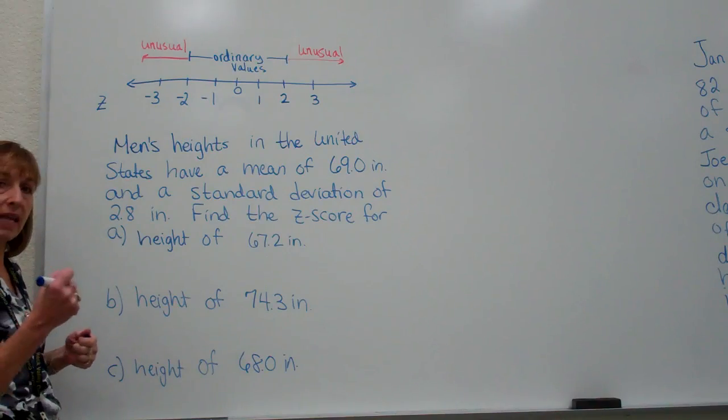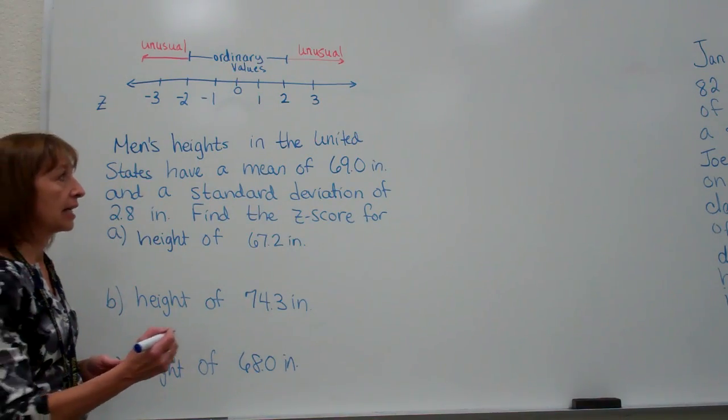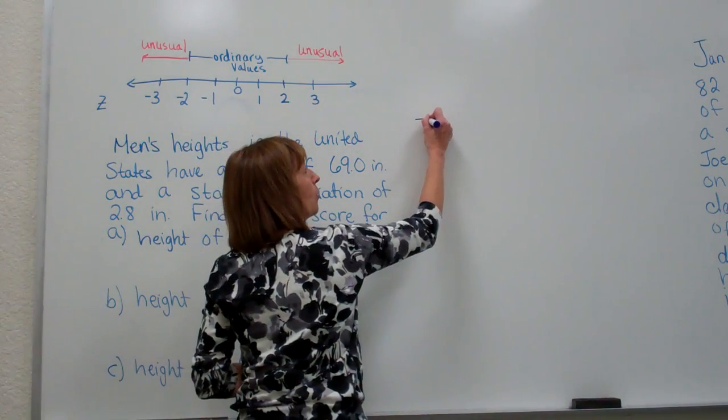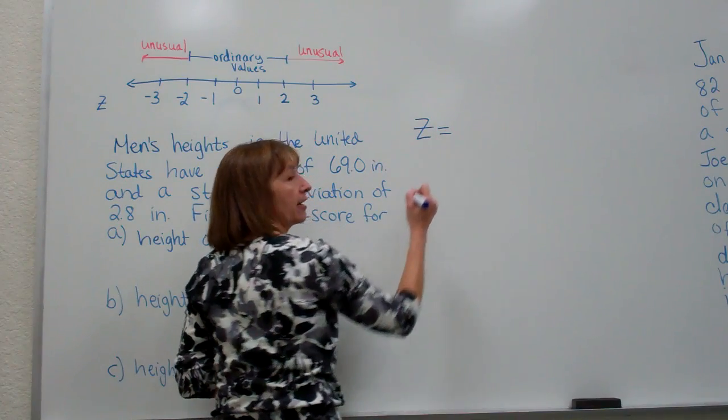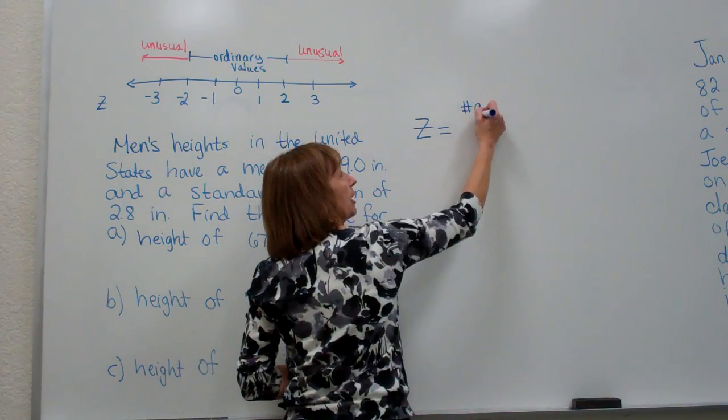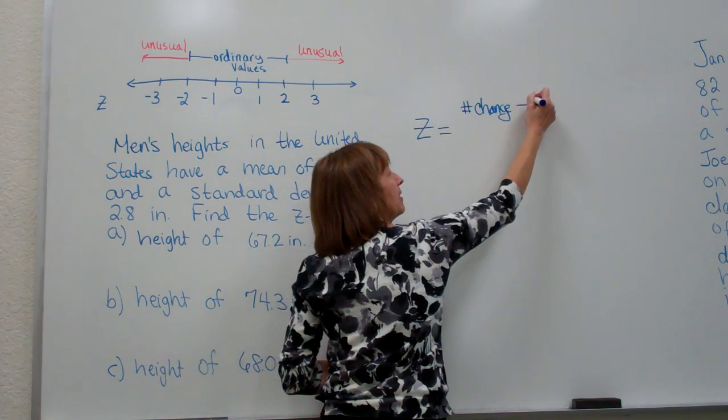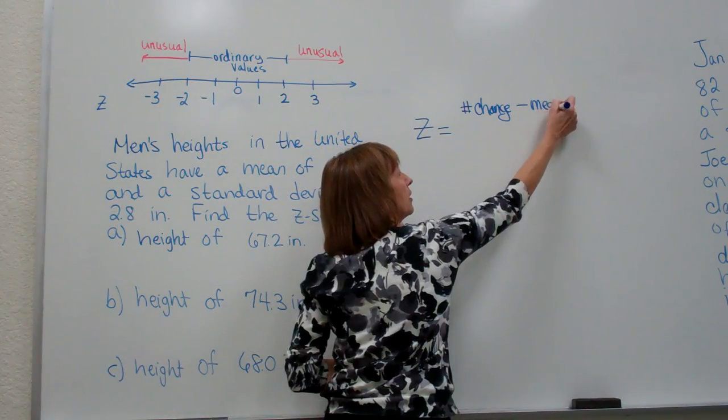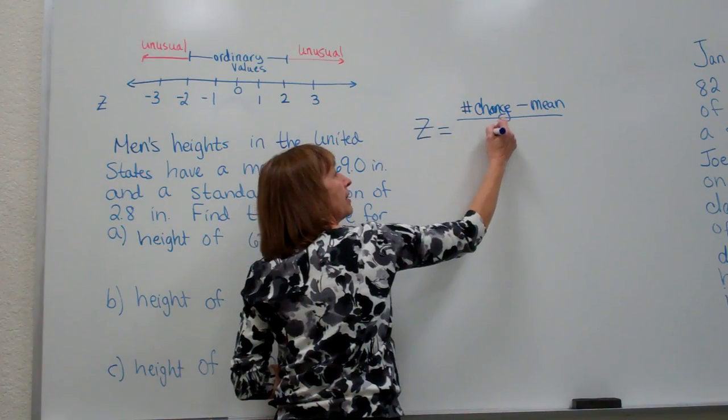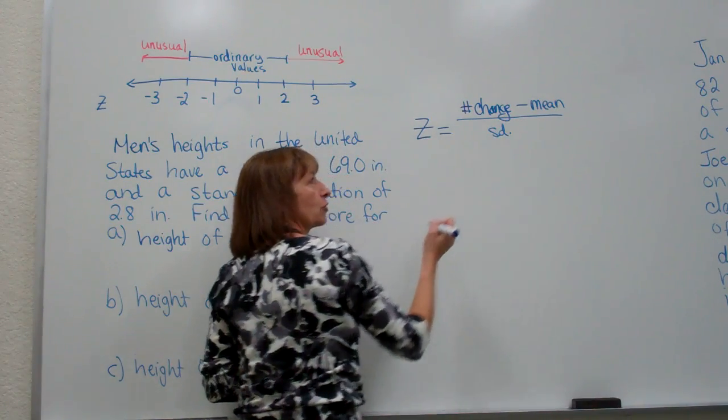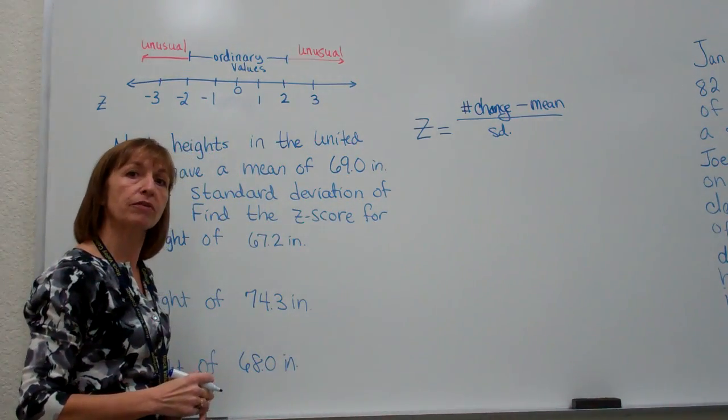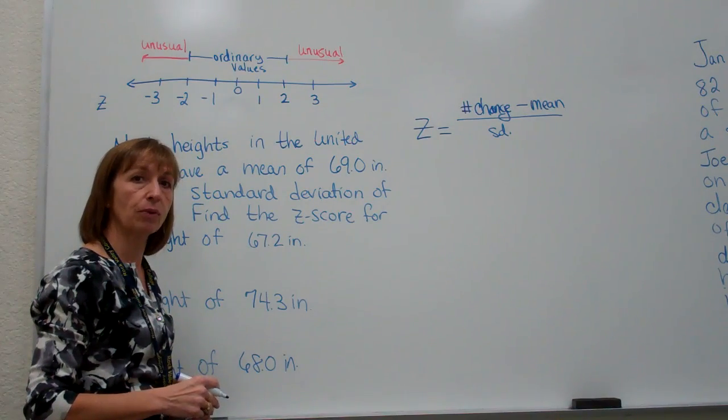Let's start by saying what our z-score formula is. To find the z-score for a particular data value, you take the number you're changing minus the mean of the distribution and you divide it by the standard deviation of the distribution, and that will give you the number of standard deviations your value is away from the mean.